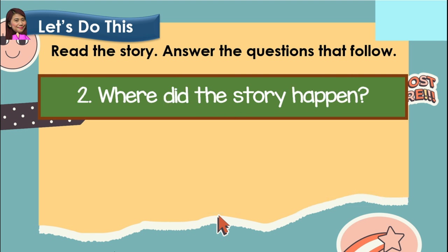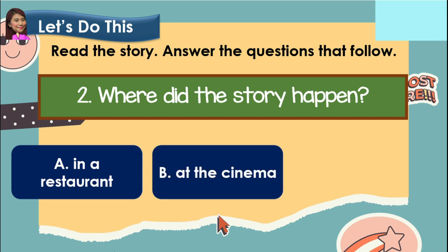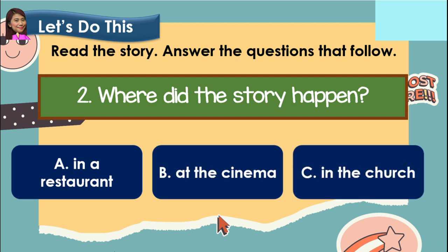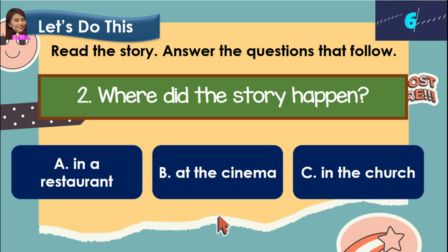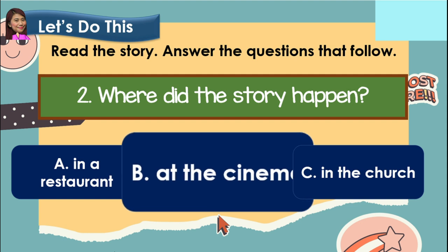Number two: where did the story happen? A. In a restaurant? B. At the cinema? Or C. In the church? And the answer is letter B, at the cinema.